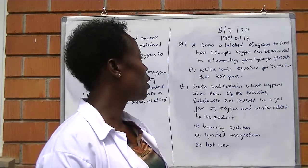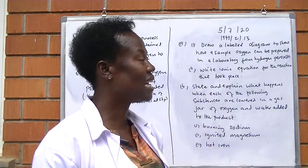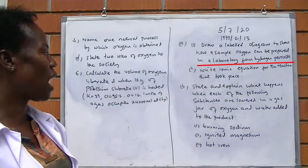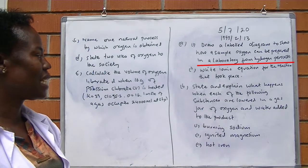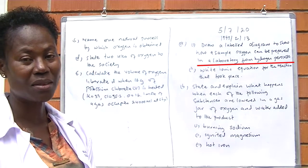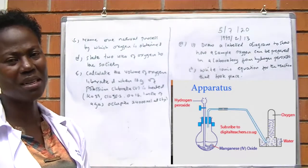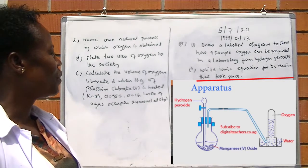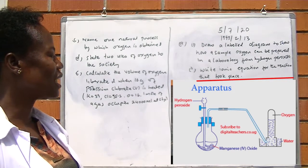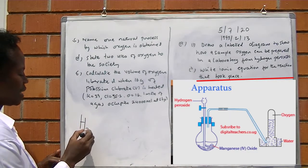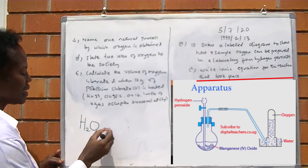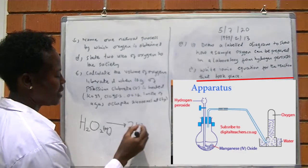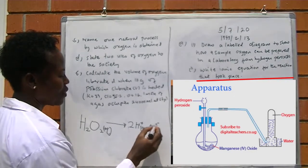Another example is from 1999, number 13, paper 2. Draw a laboratory diagram to show how a sample of oxygen can be prepared in the laboratory from hydrogen peroxide. From our previous experiments, I think you can draw the apparatus. Roman number 2, write ionic equation for the reaction that took place. Two hydrogen peroxide will ionize to produce two hydrogen ions plus oxygen gas.